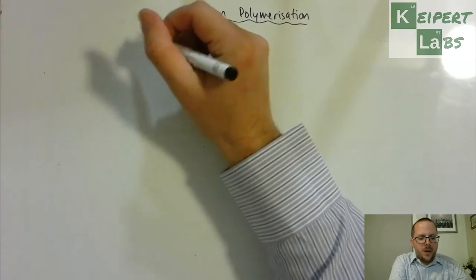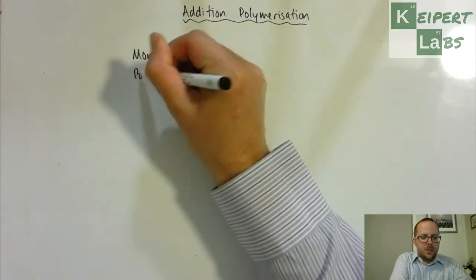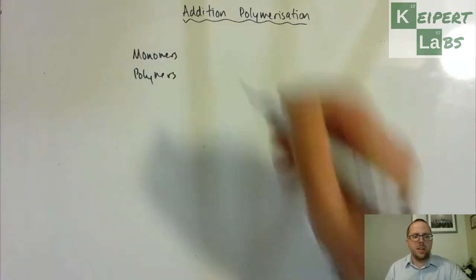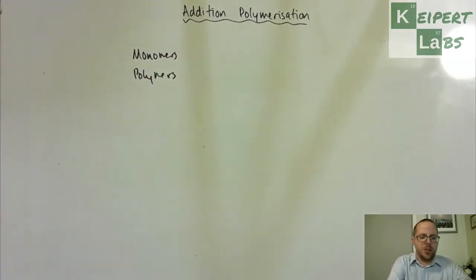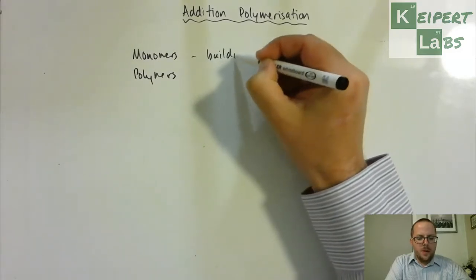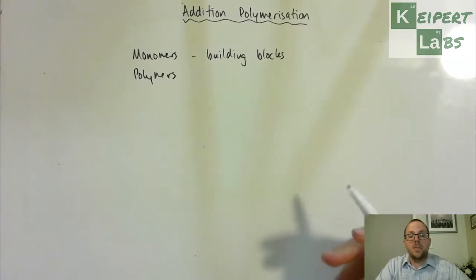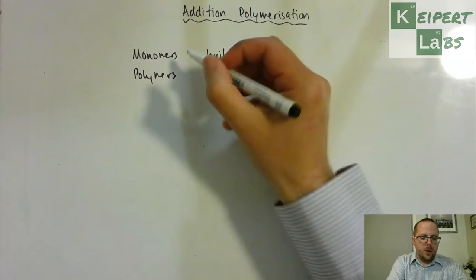We've got two key terms to introduce first just to help us develop our language here. So we talk about monomers and polymers. Now monomers are basically the building blocks of long chain molecules which we call polymers.